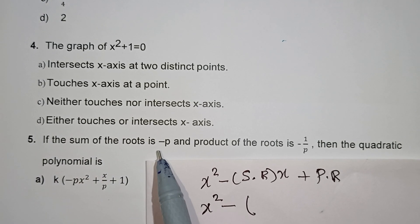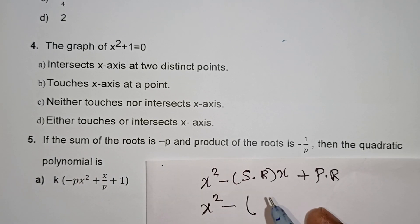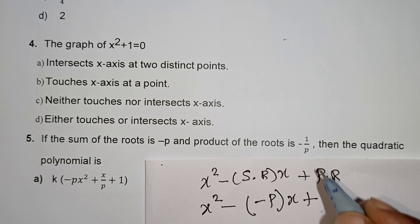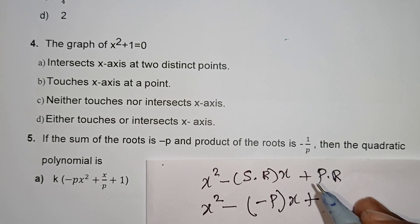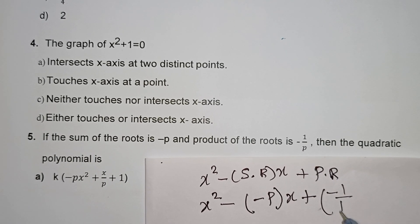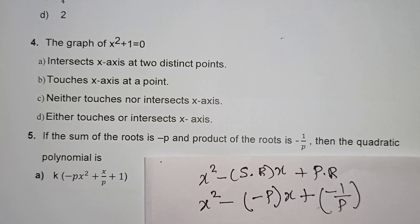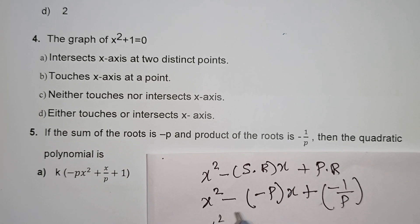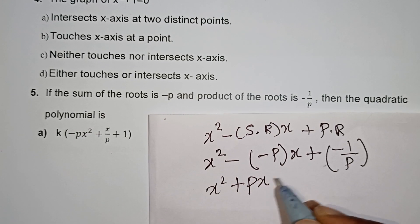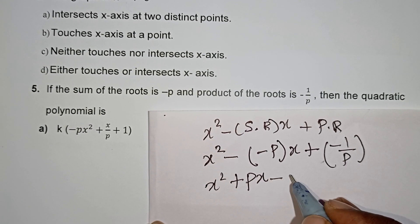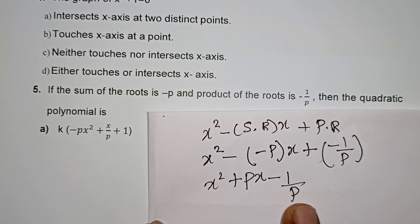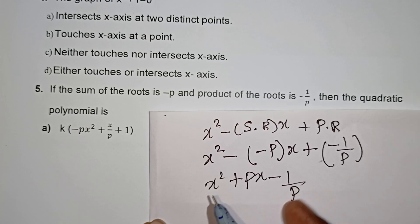The sum of the root is minus p, so substituting: x² minus (minus p)x plus (minus 1 by p), which gives x² plus px minus 1 by p. Opening the bracket: x² minus p, plus p, and this is plus into minus, so minus 1 by p. This is the quadratic polynomial.